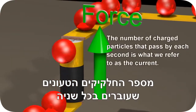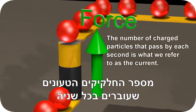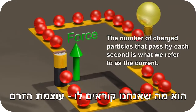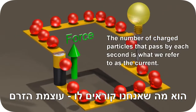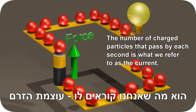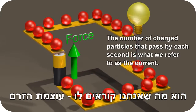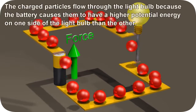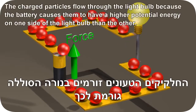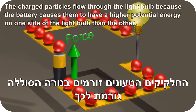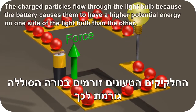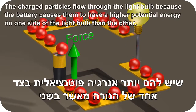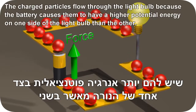The number of charged particles that pass by each second is what we refer to as the current. The charged particles flow through the light bulb because the battery causes them to have a higher potential energy on one side of the light bulb than the other.